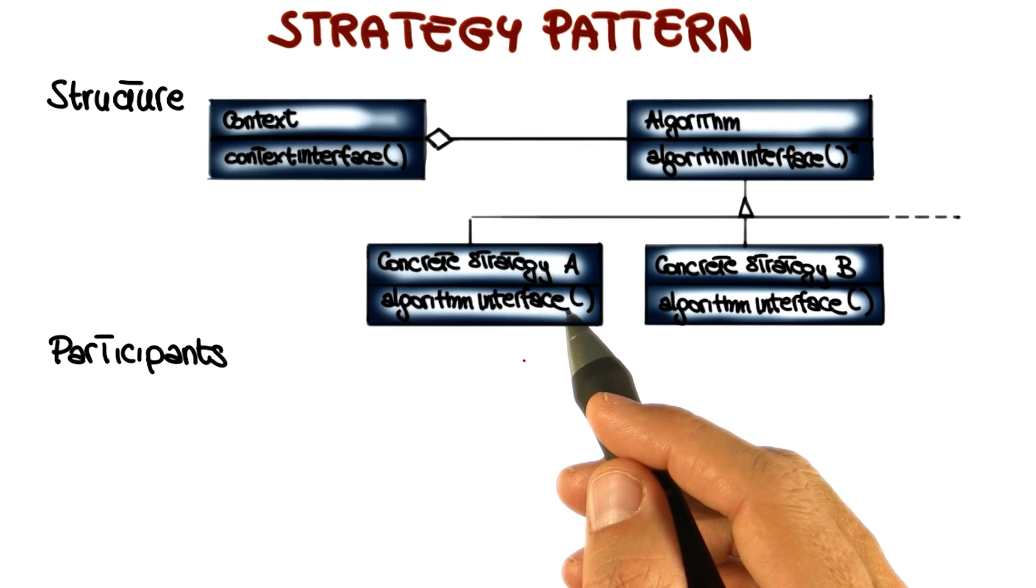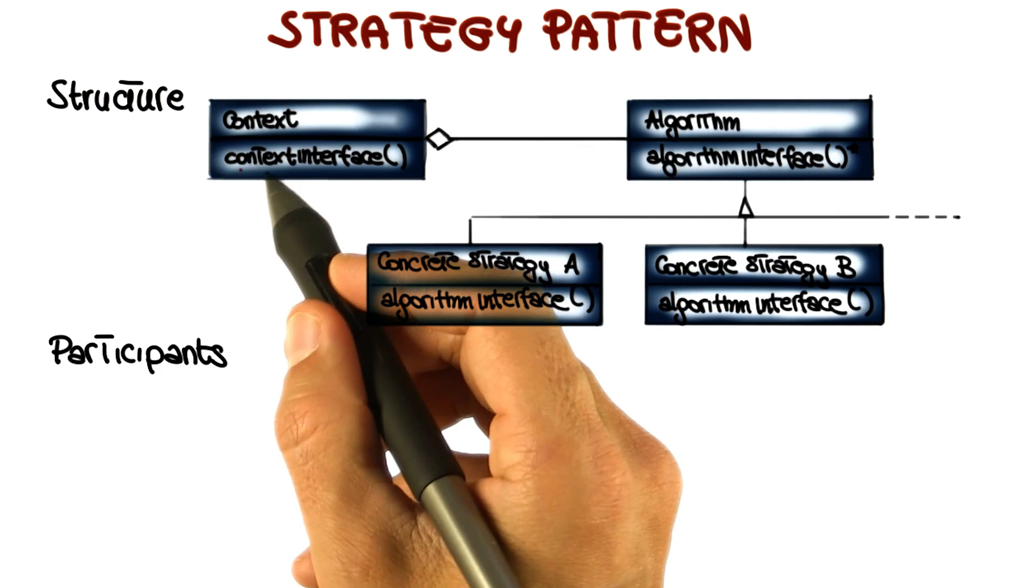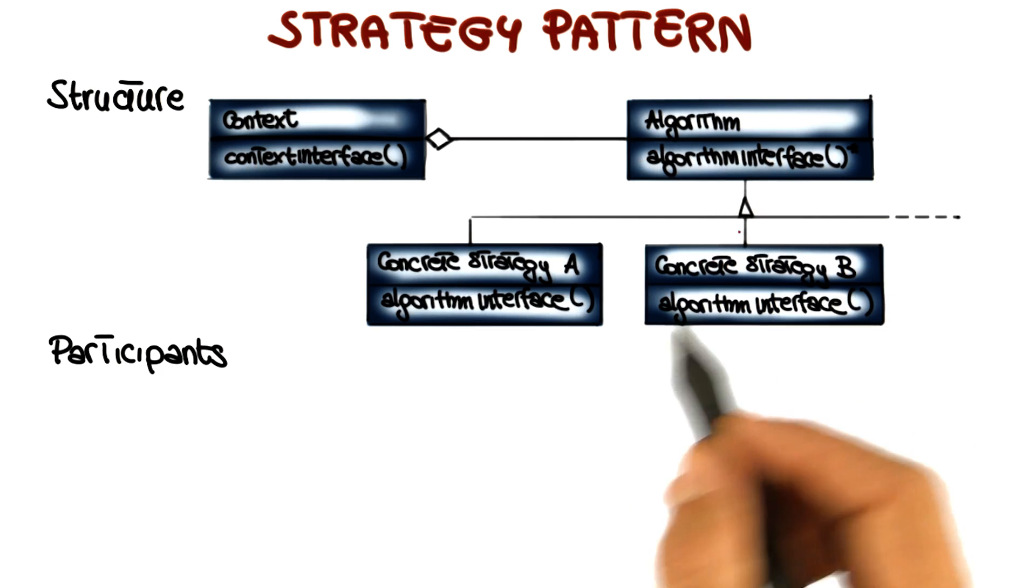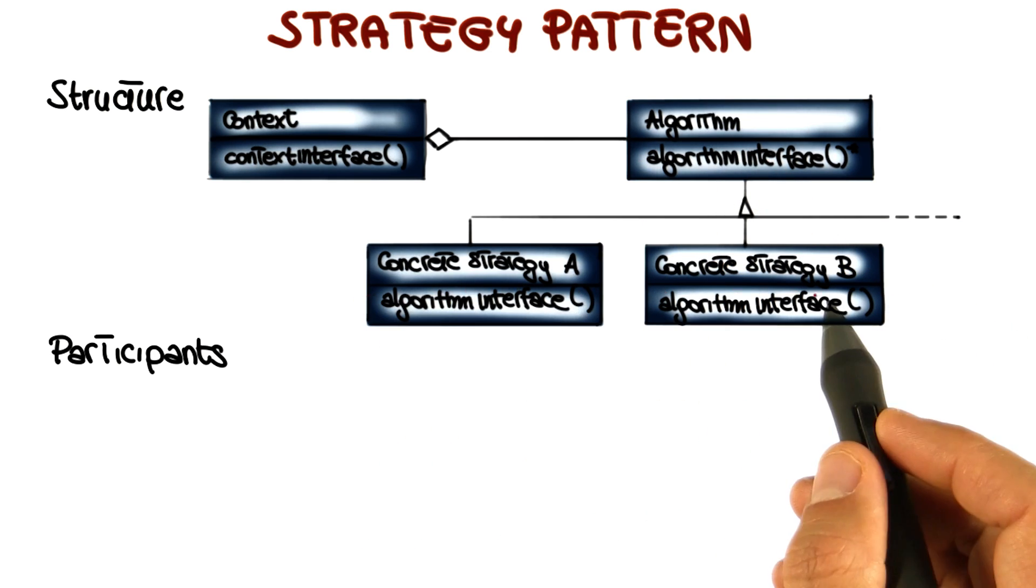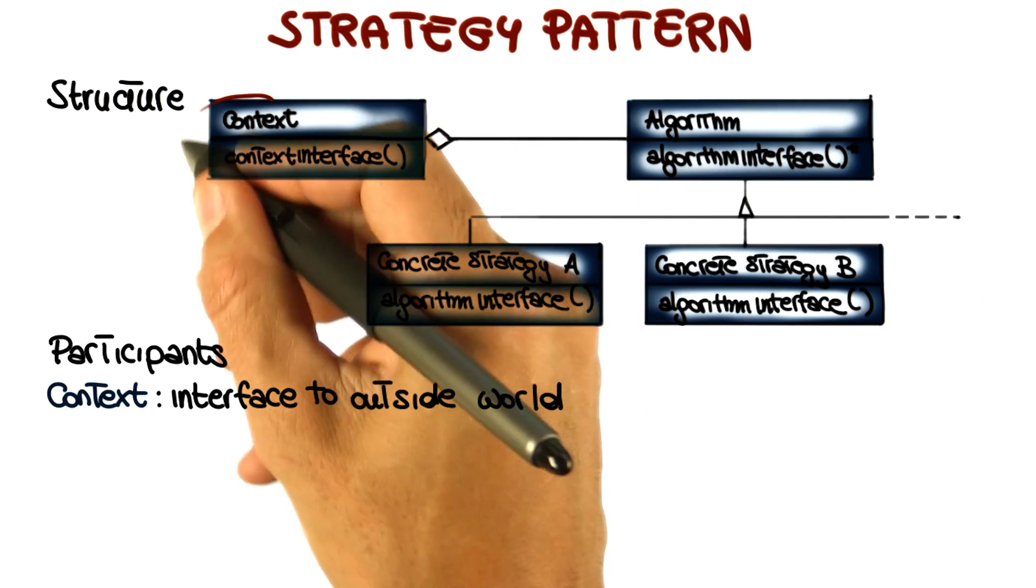In this case, we have three types of participants for this pattern: the context, the algorithm, and the concrete strategies. They can be as many as the number of behaviors that I need to implement. So let's see what those are.